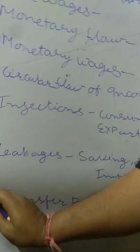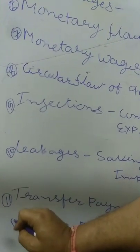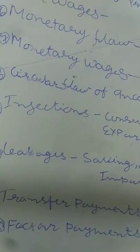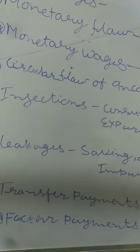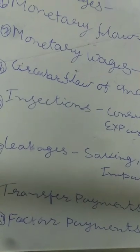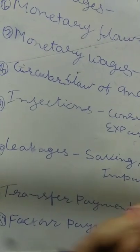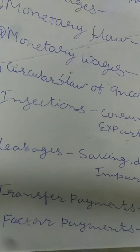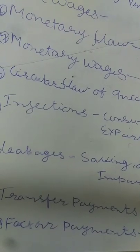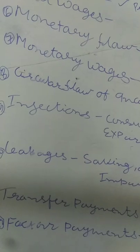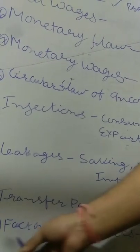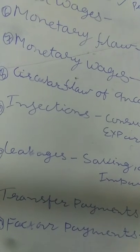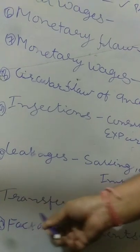Next topic: Transfer Payments versus Factor Payments. Factor payments are those monetary remunerations which factors of production — land, labor, capital, and enterprise — receive in any production activity, in the form of rent, wages, interest, and profit. Any payment which is rendered without any productive activity is known as a transfer payment.